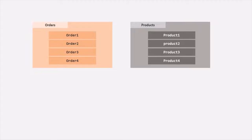Let's say we have an orders collection and we have a products collection. When a customer purchases something from our application and makes an order, a document will be created in the orders collection. That document will store details of that particular order — for example, the order ID, when that order was made, what products were bought in that order. For order-1, let's say the customer has purchased product-1 and product-3.